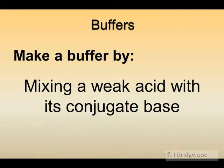So how do we make a buffer? We can mix the weak acid with its conjugate base. For example, we could take a solution of ethanoic acid and dissolve solid sodium ethanoate into it, or mix it with a sodium ethanoate solution — either would be okay. Or ammonia solution with solid ammonium chloride. So mixing a weak acid with its conjugate base, or a weak base with its conjugate acid.